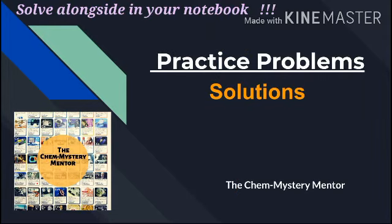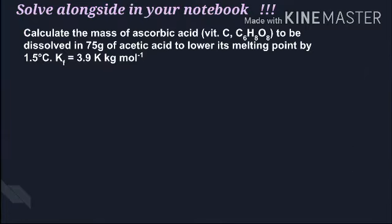Hello and welcome to the next set of practice problems for our chapter on solutions. Our first question is: calculate the mass of ascorbic acid (vitamin C, C₆H₈O₆) to be dissolved in 75 grams of acetic acid to lower its melting point by 1.5 degrees Celsius. Kf is equal to 3.9 Kelvin kilogram per mole.